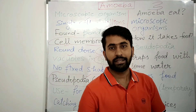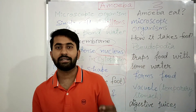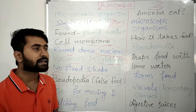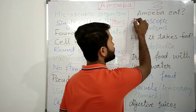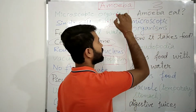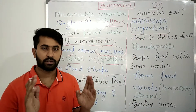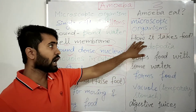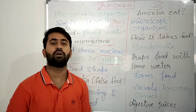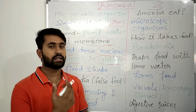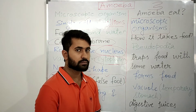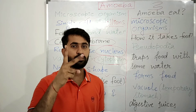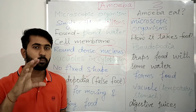What does the amoeba eat? Amoeba is a very small organism — it eats other microscopic organisms that are present in the water. The amoeba catches its food using the pseudopodia.